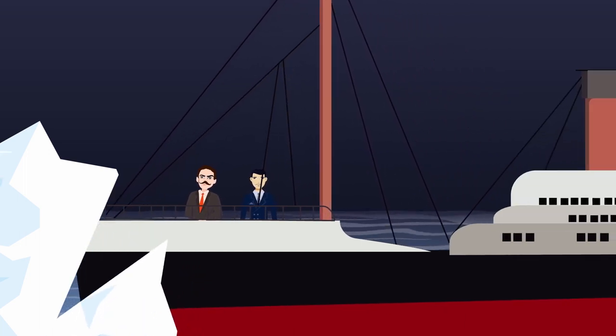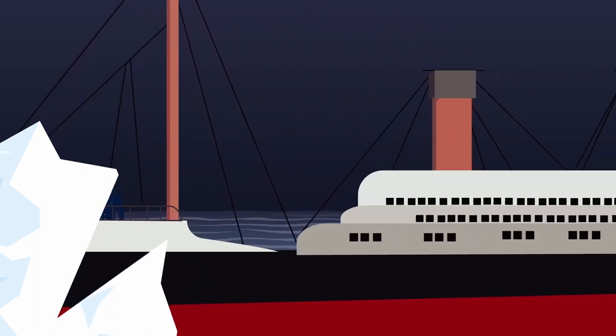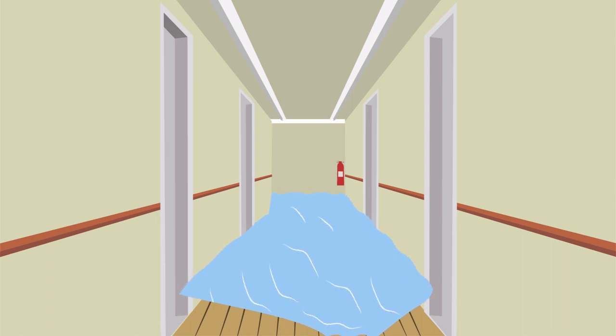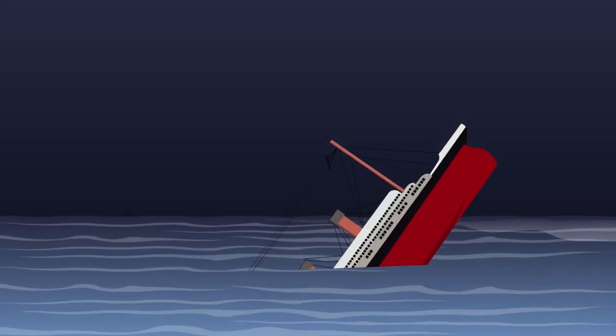So, Ismay ordered that the ship move slow ahead, which we presume means to move ahead slowly. Unfortunately, this caused more water to flow through the ship's hull, with the pressure causing even more watertight rooms to rupture and the ship to sink unusually quickly.